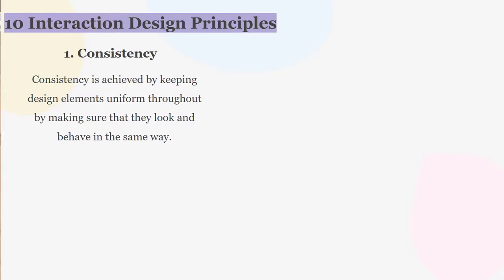Number one is consistency. Over the years, users have become familiar with certain design elements by interacting with products and interfaces, so it's very important that the design should be consistent. Consistency is achieved by keeping design elements uniform throughout, making sure that they look and behave in the same way. A consistent design makes it easier for users to learn the interface and reduces the probability of misusing it.